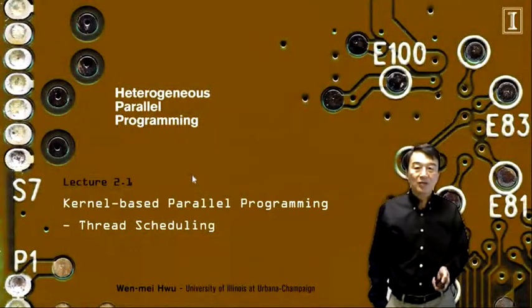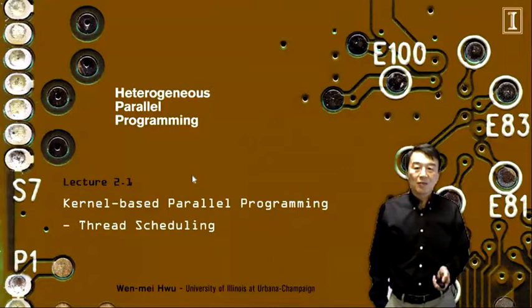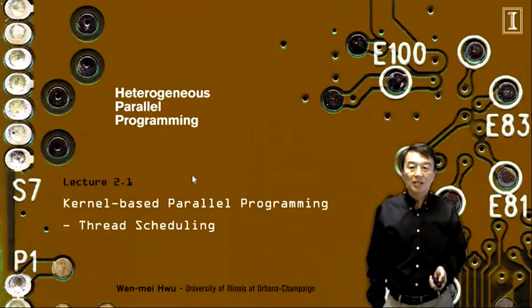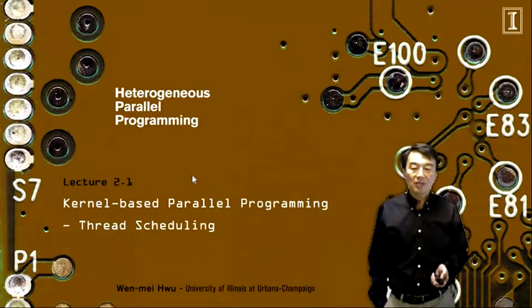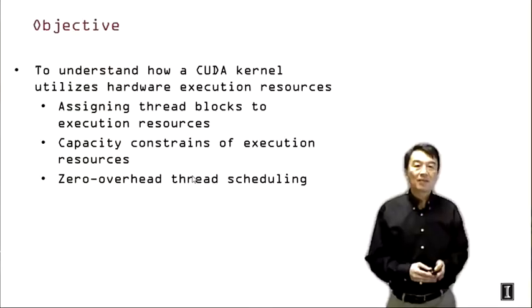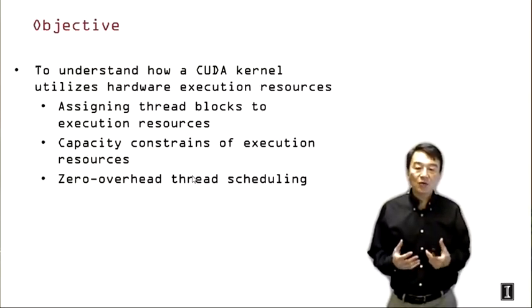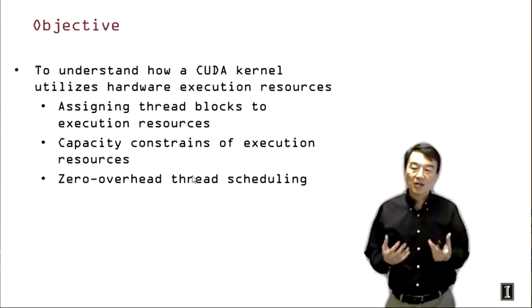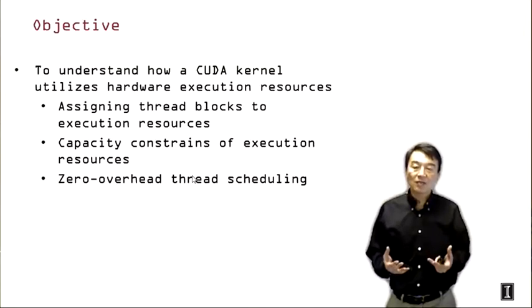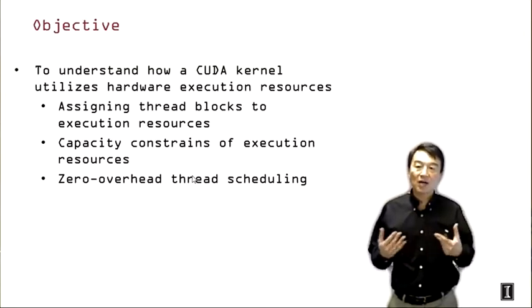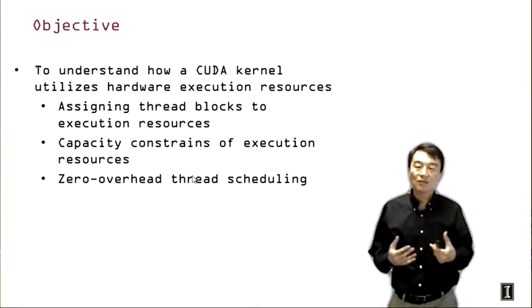Hello everyone, welcome back to the Heterogeneous Parallel Programming class. We are at the beginning of week two, and this is lecture 2.1: Kernel-Based Parallel Programming. We'll be discussing thread scheduling today. The objective of this lecture is to help you understand how a kernel utilizes hardware execution resources, because even though we write a parallel program, ultimately it has to execute on parallel hardware resources to produce results and achieve good execution speed.